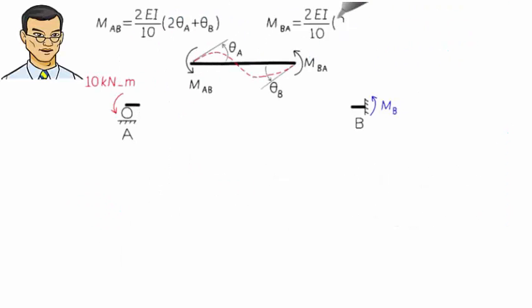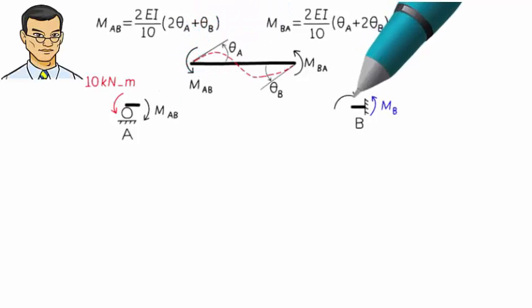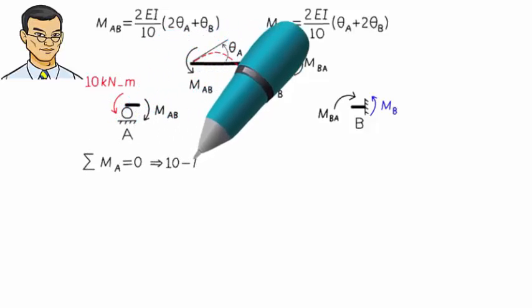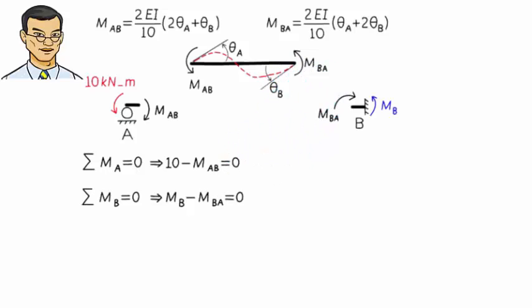Since the member end moments also appear at the joints, we get equilibrium equations. Note that at B, in addition to MBA, we have an unknown moment reaction labeled MB. Therefore, joint equilibrium equations become as shown. Substituting this expression for MAB and this expression for MBA in the equilibrium equations, we get the final form.